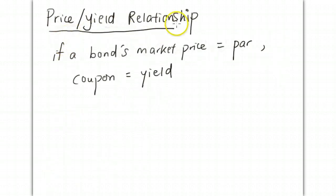Price-yield relationship: if a bond's market price equals its par value—for example, both are $1,000—then the coupon will equal the yield. The yield is the return that an investor will enjoy if he holds the bond to maturity.